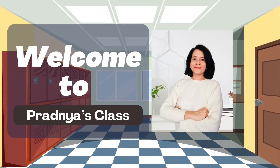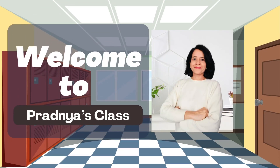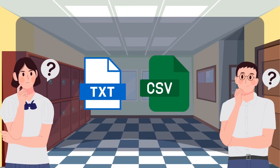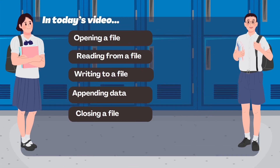Hi, welcome back. Hope you are enjoying this learning journey so far. So what exactly is a text file? It's a simple file that stores data in human-readable form. You must have seen files with extensions like .txt or .csv — those are text files. In today's video, we are going to explore some operations on the file: opening a file, reading data from a file, writing to it, how to append data, and how to close it.